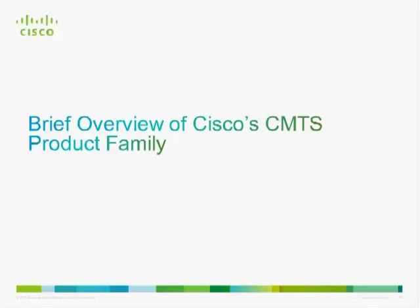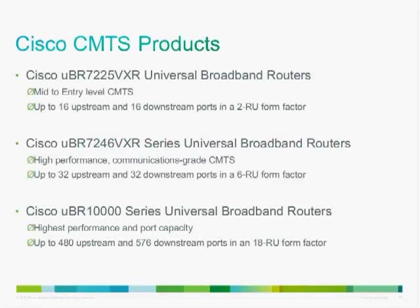Cisco CMTS platform offerings: The Cisco UBR7225 is the 'pizza box,' a two-rack-unit form factor limited to up to 16 upstream and 16 downstream ports, suited for smaller markets. For growing or larger markets, the UBR7246 VXR offers higher performance in a six-rack-unit form factor with up to 32 upstream and 32 downstream ports depending on installed line cards.